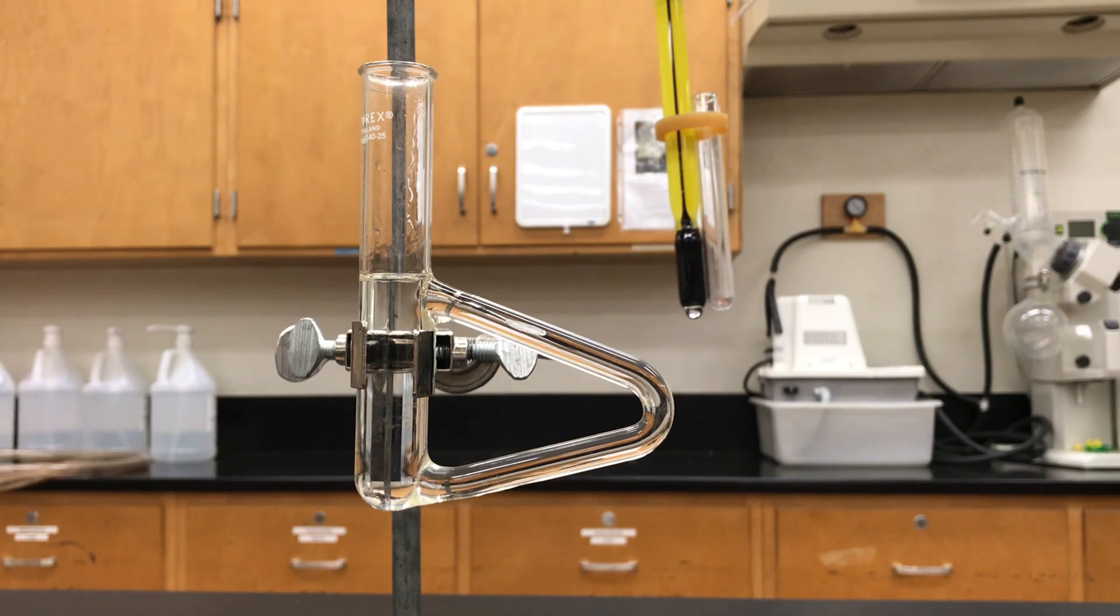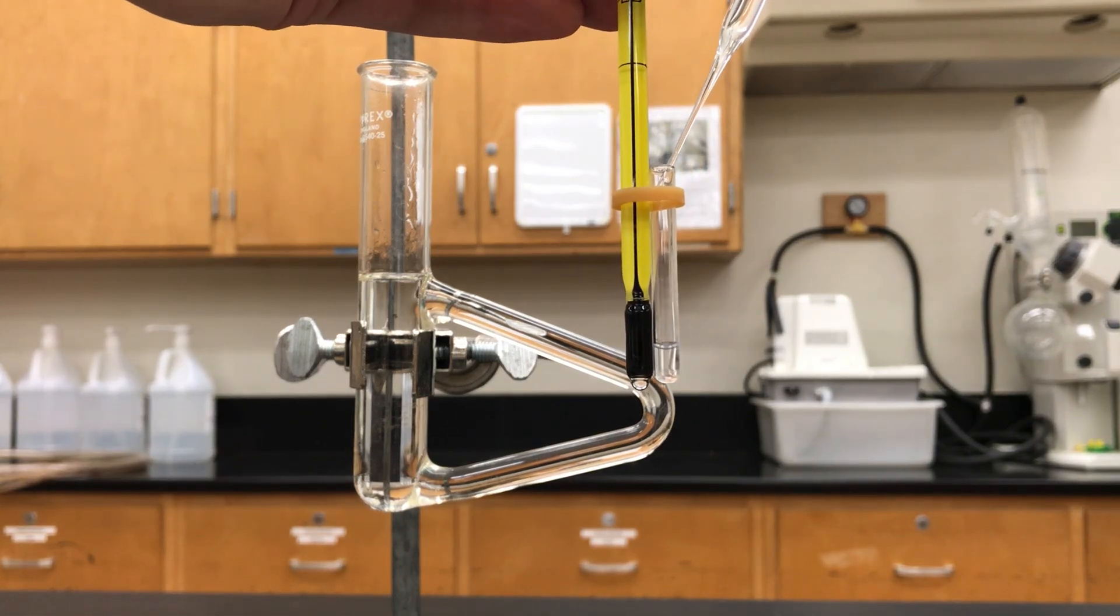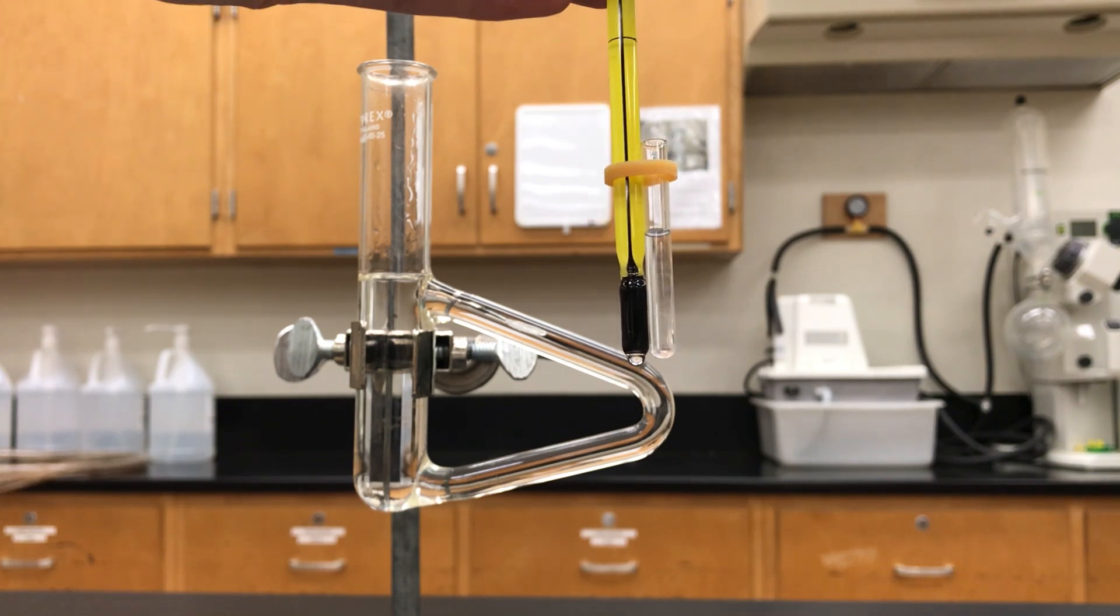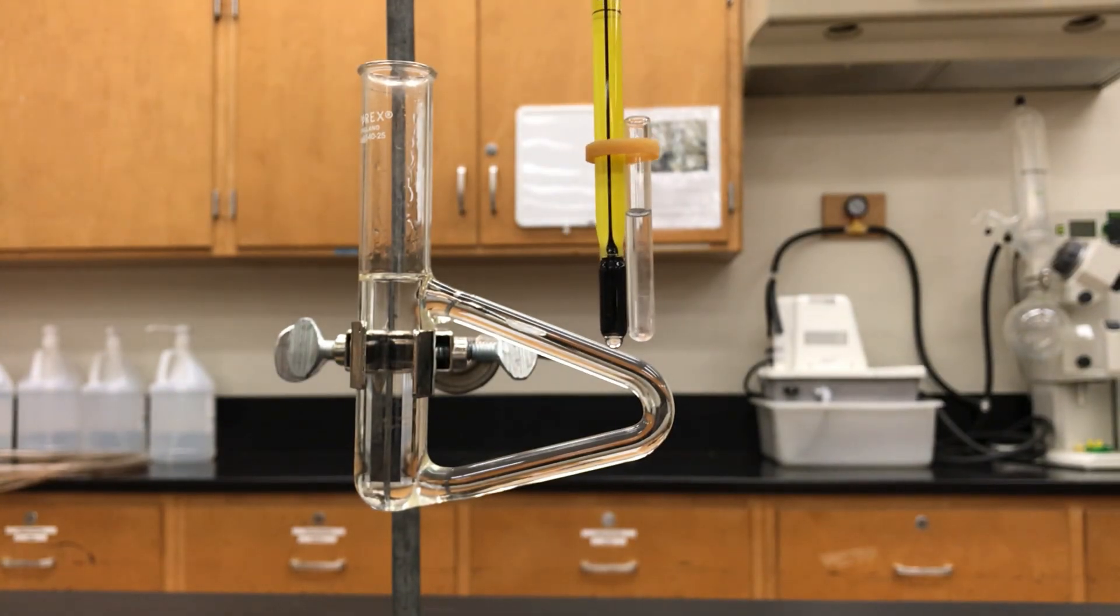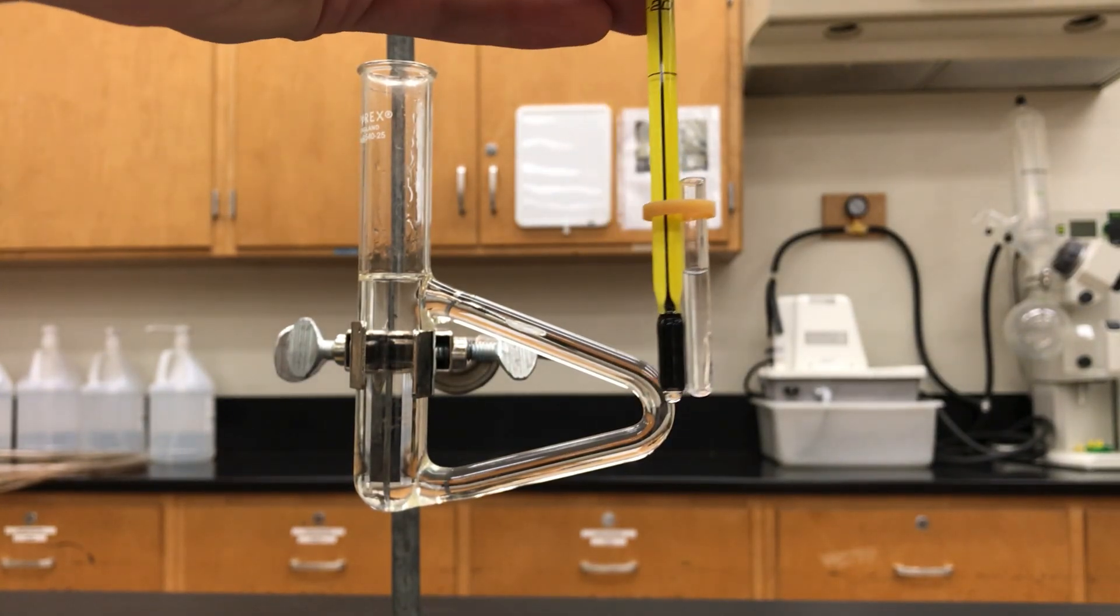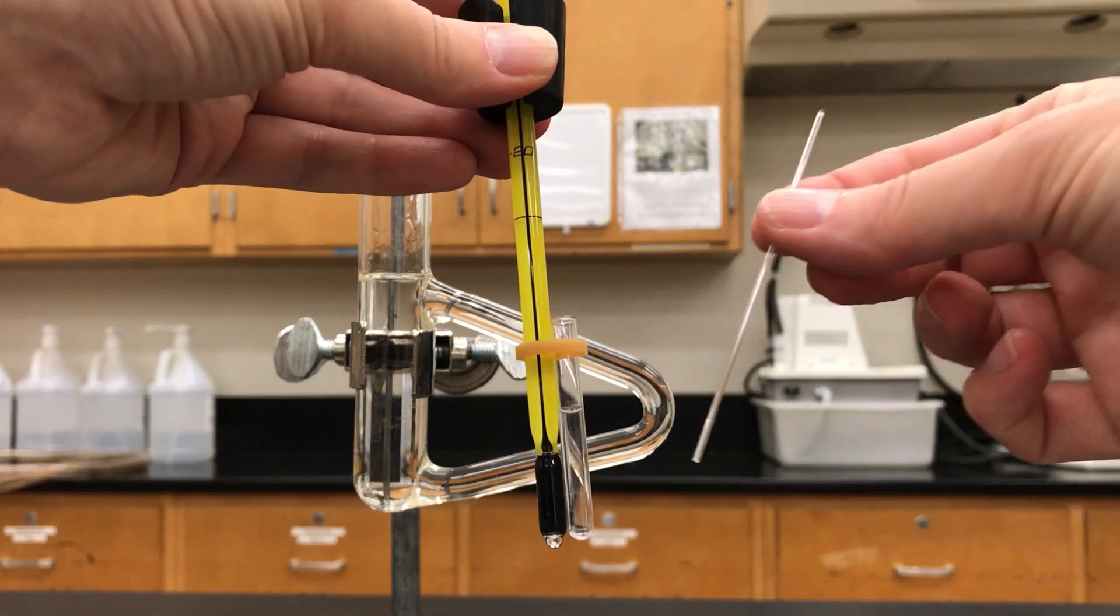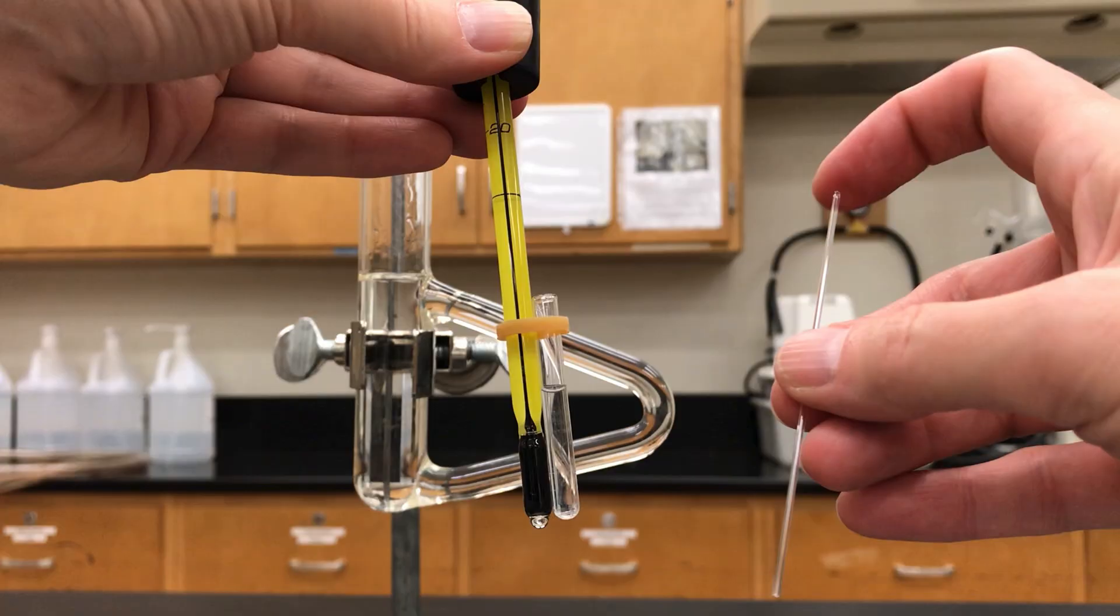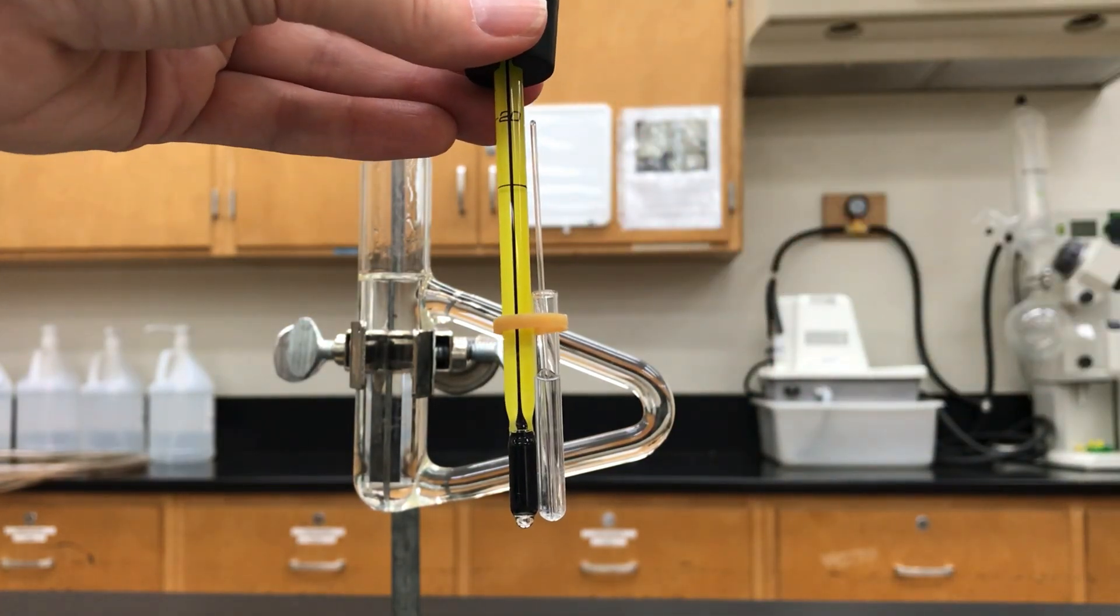And next you want to take the liquid that you want to analyze its boiling point of and add that to the Durham tube. Fill it up roughly between a half and two thirds full. And then you're going to take a capillary tube which is open on one end and sealed on the other end and put it into the tube with the open end down. The sealed end should be on the top.